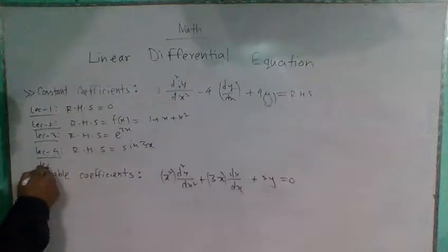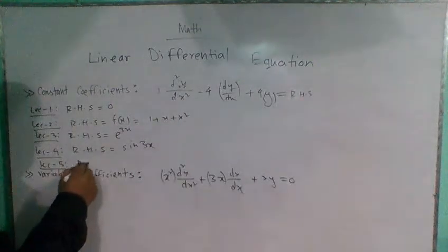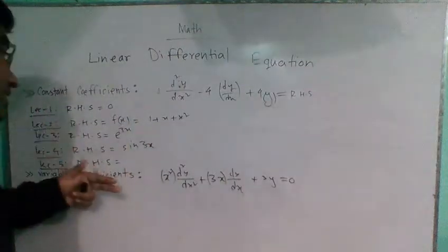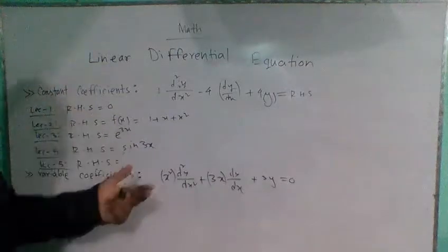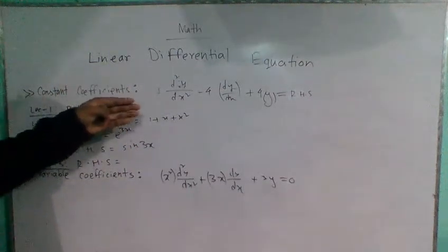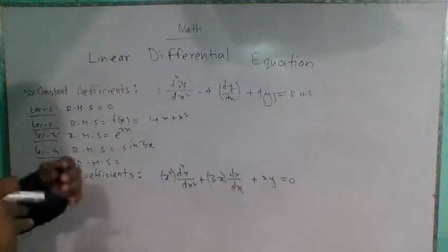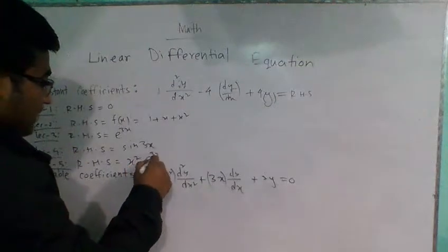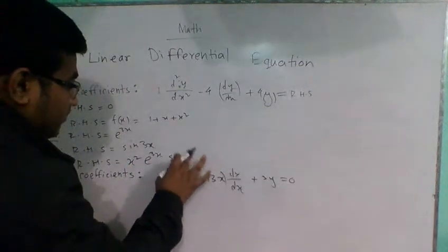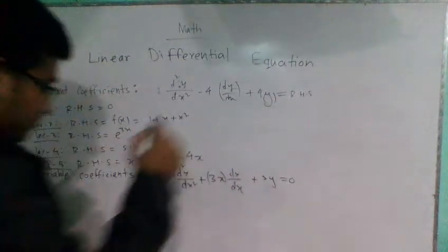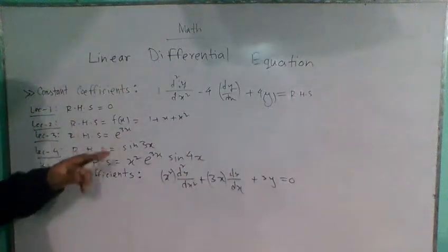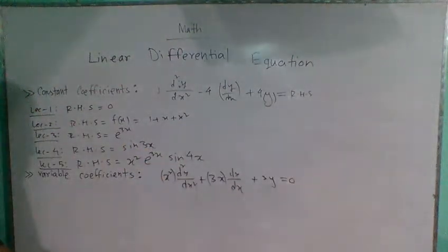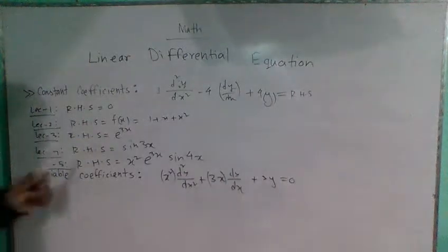Then in lecture 5, the right-hand side will be a combination of trigonometric and algebraic, or exponential and algebraic functions. For example, 3x squared sin 4x — this combines a trigonometric and algebraic expression. Lecture 5 also covers the linear differential equation with variable coefficient.